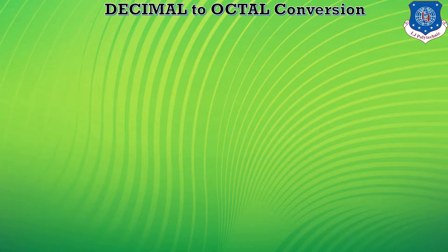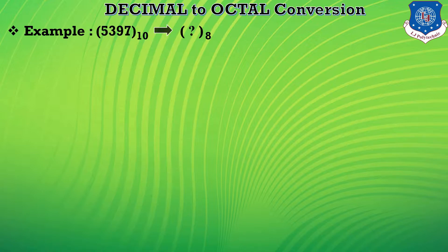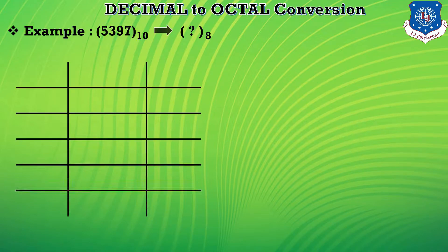Today I am going to teach you the step-by-step procedure for conversion of decimal number system to octal number system. Here I am going to teach you how to convert decimal numbers into octal numbers. I take an example of 5397 as a decimal number. For its octal conversion we need the divisional method, and for our reference we use a calculator.